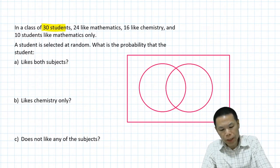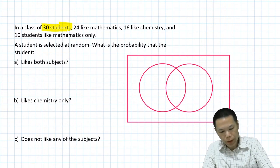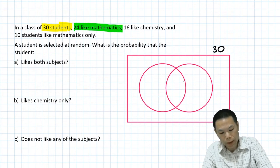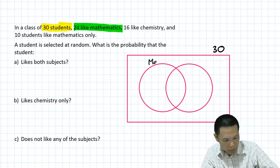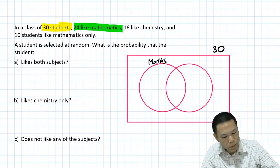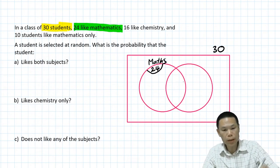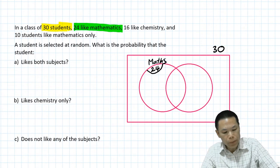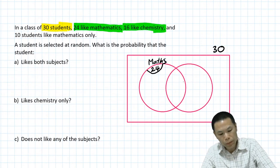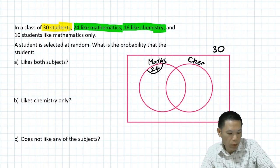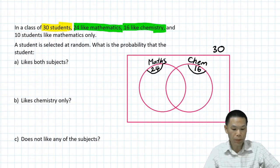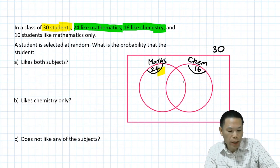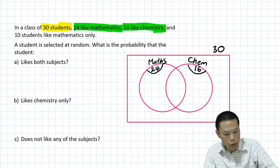So we know that there are 30 students altogether, so I write 30 here — the total is 30. And 24 students like mathematics, so just write Maths here. This circle must contain 24. And 16 students like chemistry, so Chemistry is 16. We know there are 10 students who like mathematics only — that's in this region here — so we write 10 here.